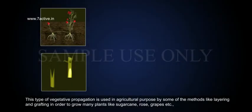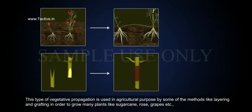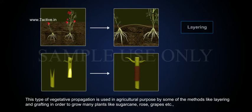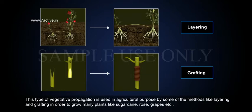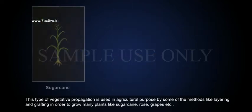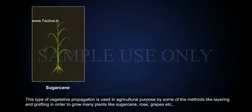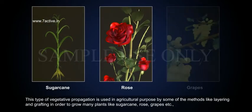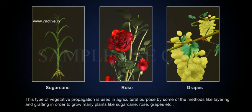This type of vegetative propagation is used in agricultural purposes by some methods like layering and grafting in order to grow many plants like sugarcane, rose, grapes, etc.